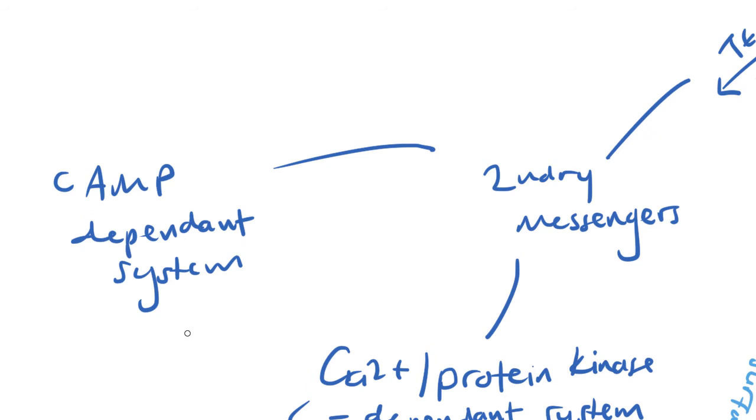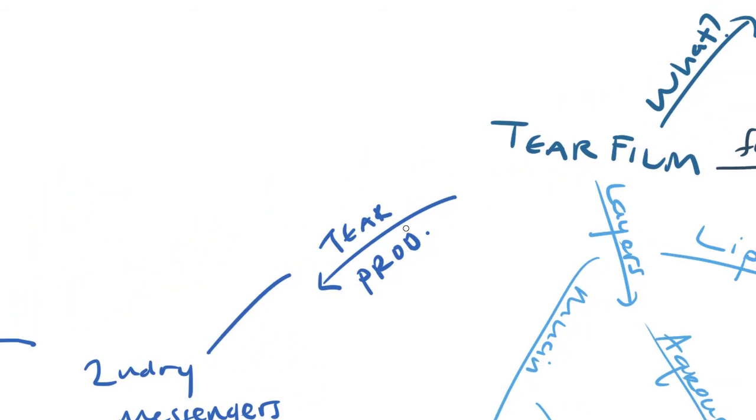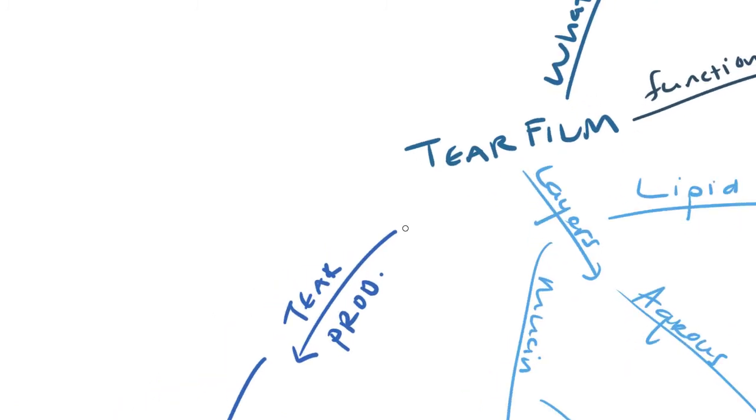Again, this is very detailed and it's beyond the scope of this lecture to go into the detail of it. But it's well worth reading about these systems to fully understand how the tear film is secreted. Okay, so we've looked now at tear production.